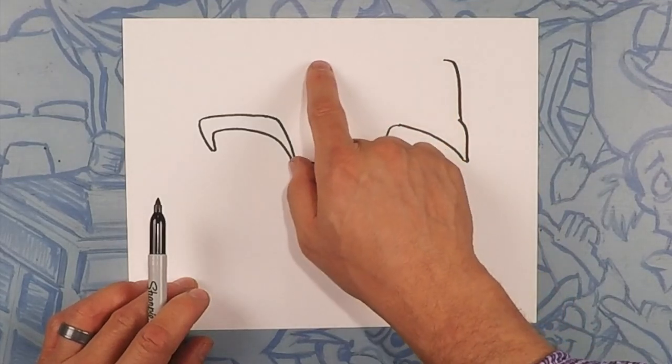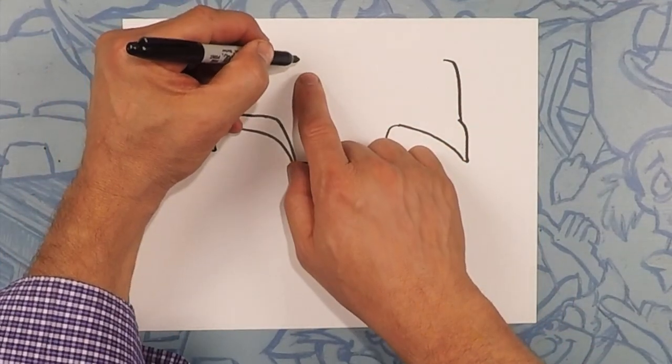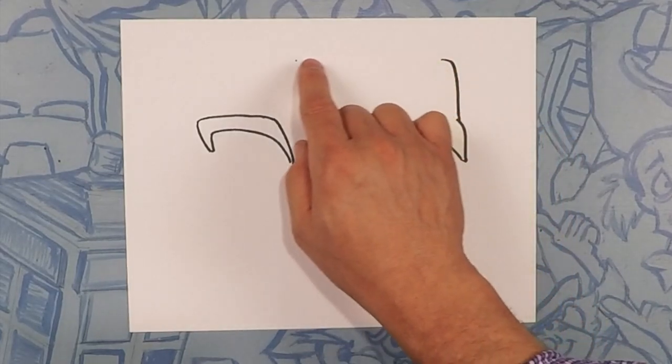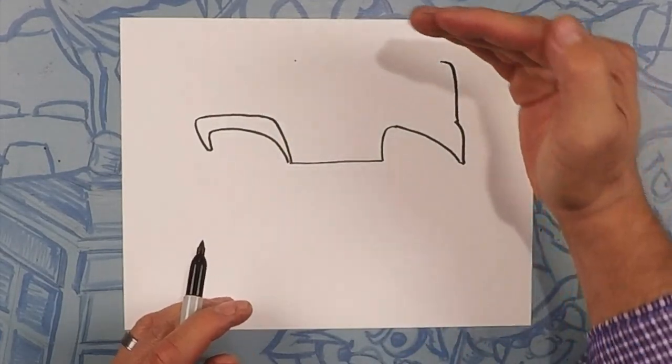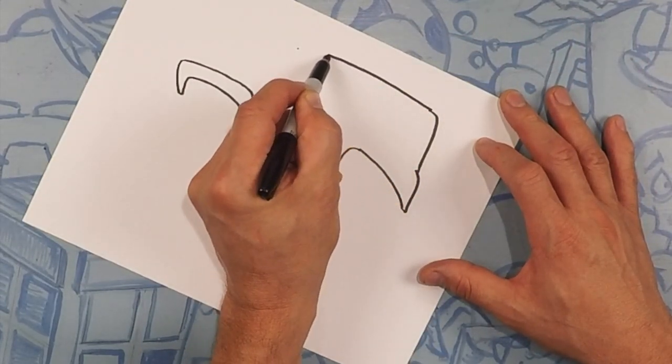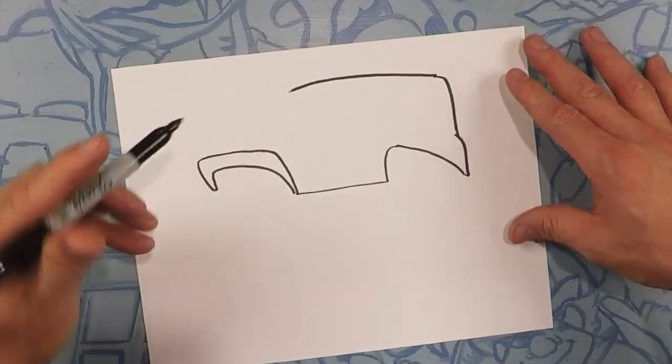So the top of this truck is going to go all the way to the front windshield to about right maybe right there. So let's go ahead and make a kind of a straight line but it's almost like it curves upward just a smidge. Perfect.